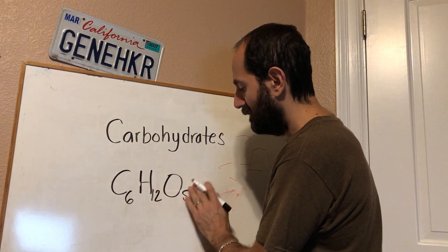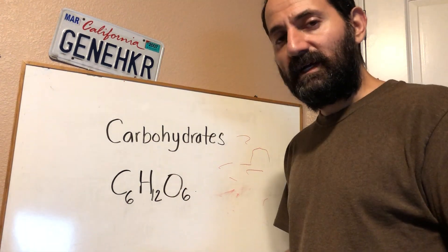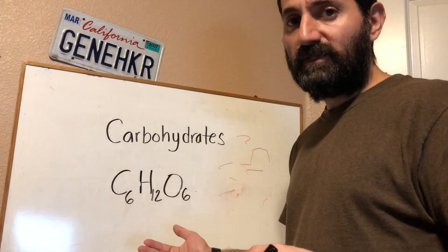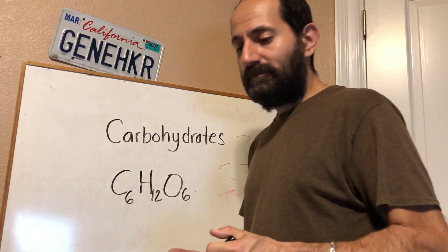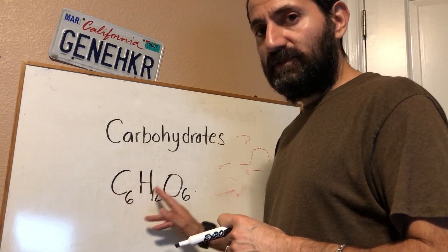Do you see the common thread here? C6H12O6. You always have twice as many hydrogens as carbons or oxygens. C6H12O6 is glucose. And again, how do you know you're dealing with a carbohydrate? You got C's, H's, and O's and a 1 to 2 to 1 ratio.